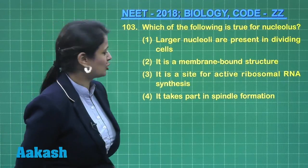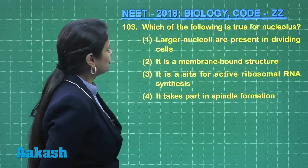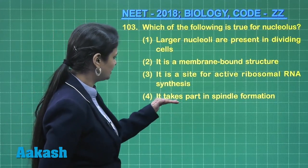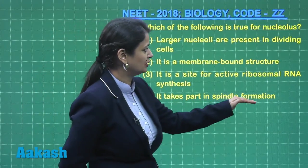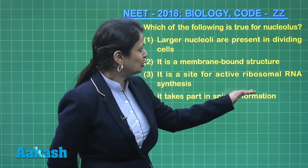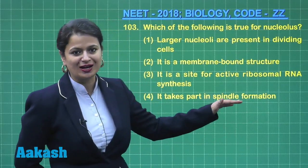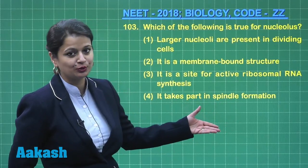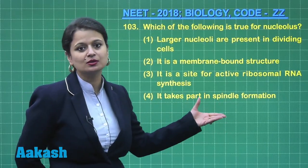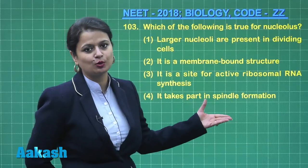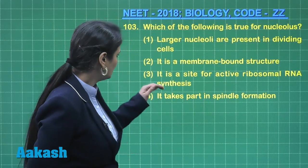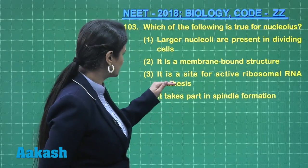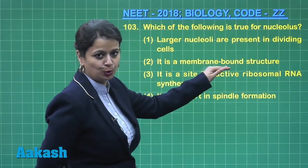One more question from cytology: which of the following is true for nucleolus? Starting from the fourth option — it takes part in spindle formation — no. The nucleolus results in the formation of ribosomal RNA, which joins with proteins to form ribosomal subunits. So it is involved in the synthesis of ribosomes, that's why you call it the ribosomal factory. It is a site for active ribosomal RNA synthesis — that's quite right.